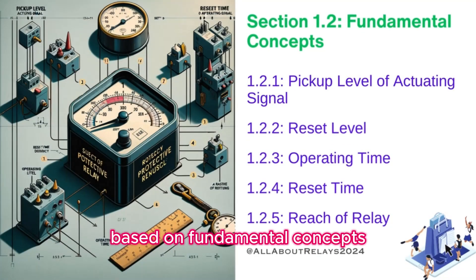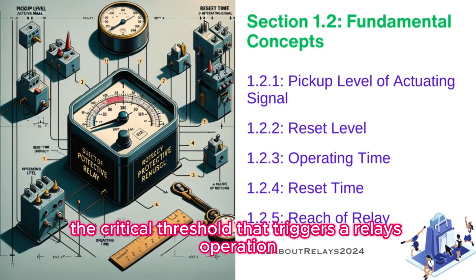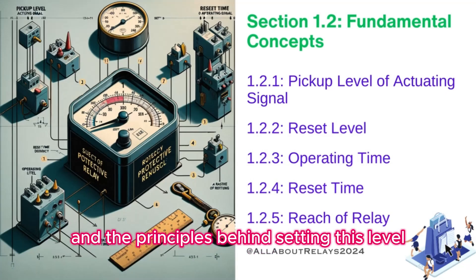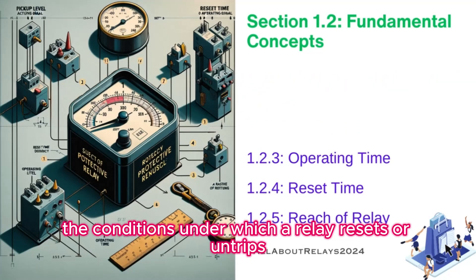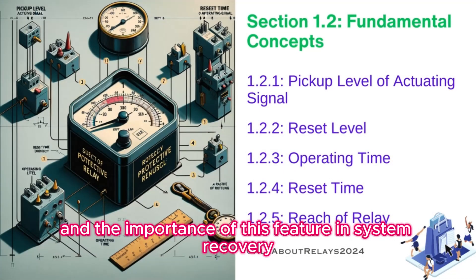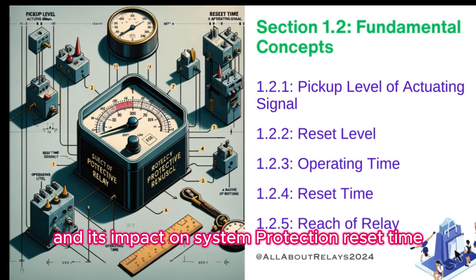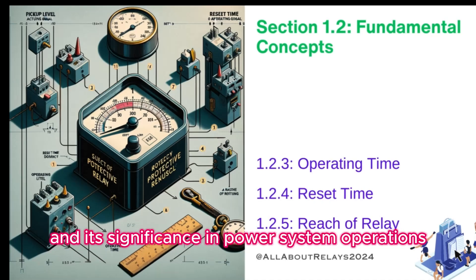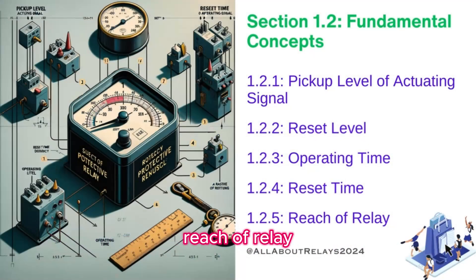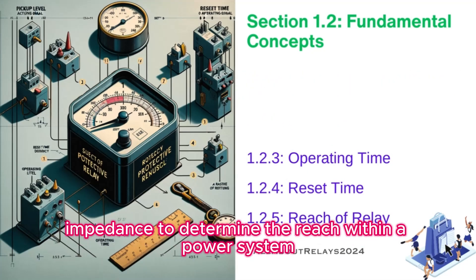Protective relay types based on fundamental concepts. Pickup level of actuating signal: defining the critical threshold that triggers a relay's operation. Reset level: understanding the conditions under which a relay resets or untrips and the importance of this feature in system recovery. Operating time: the time frame from signal detection to relay activation. Reset time: how quickly a relay can return to its normal state post-activation. Reach of relay: distance relays measure impedance to determine the reach within a power system.